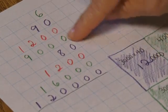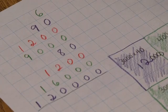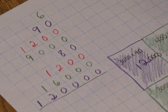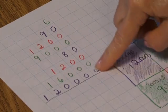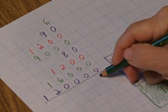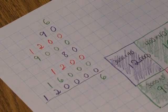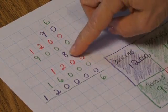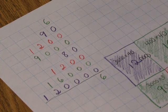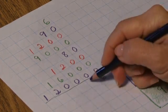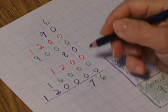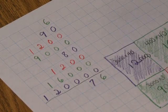Now I'll be adding these columns vertically to see what my final product is. 6 units, 9 plus 8 equals 17, 7 tens, carrying 1.